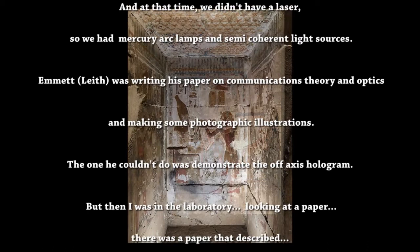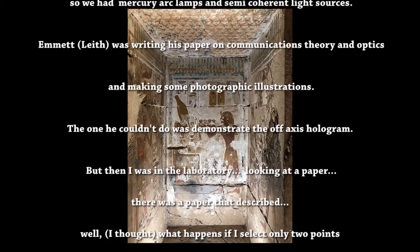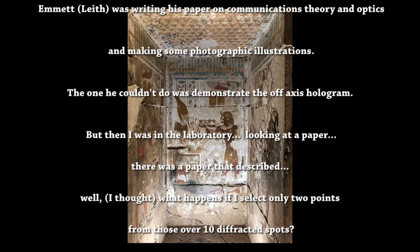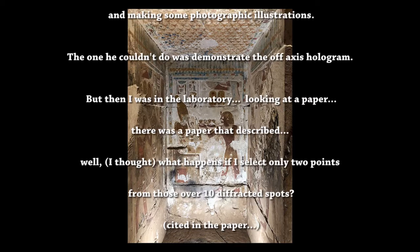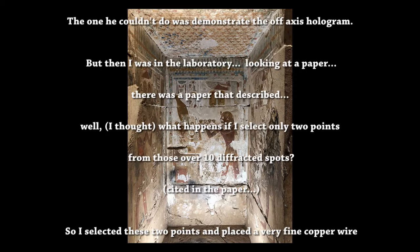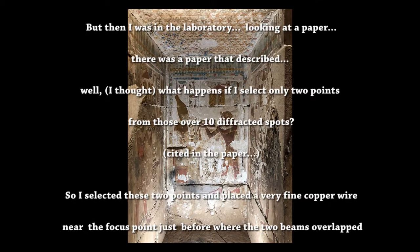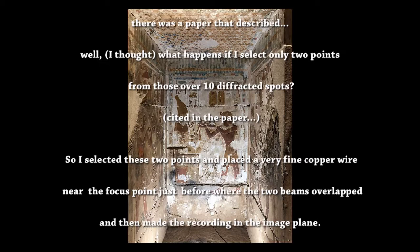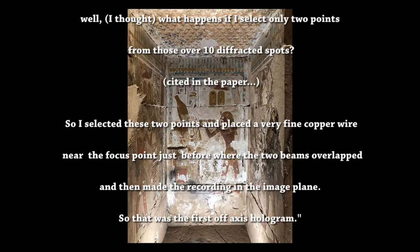Then I was in the laboratory looking at a paper that described how a Rankine roll-in imaged, and when you blocked some of the diffracted lines in the transform plane, it changed the sharpness and how the image changed. So while looking at that I thought, what happens if I select only two points from those ten diffracted spots? And of course it looked like interference lines, very contrasty all across the field.